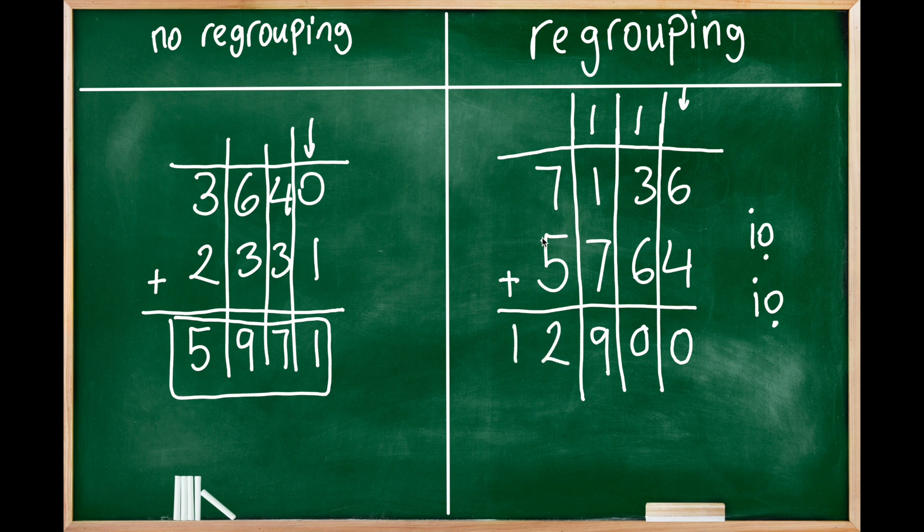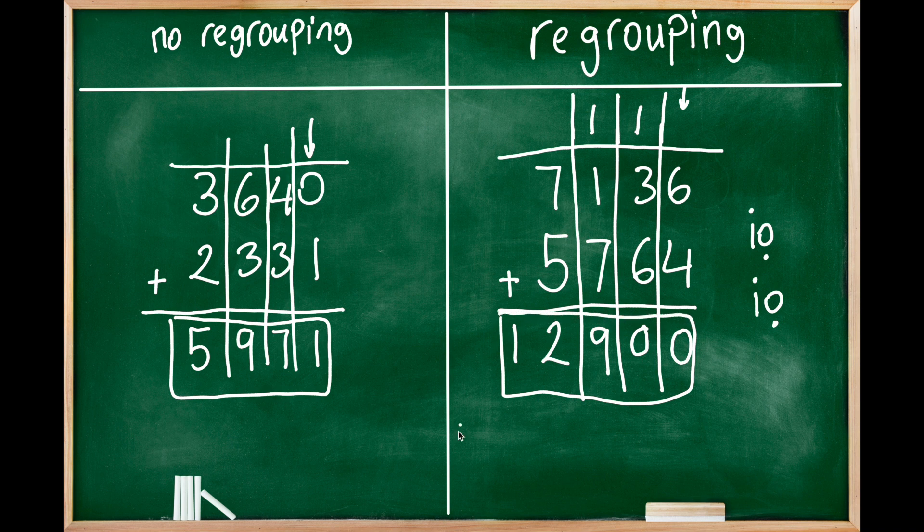We directly write it because there is no other digit left, and then we finalize our sum. Twelve thousand nine hundred is the result of this four digit addition.